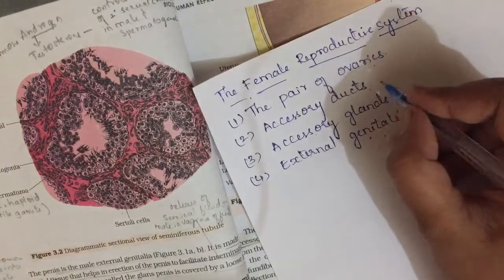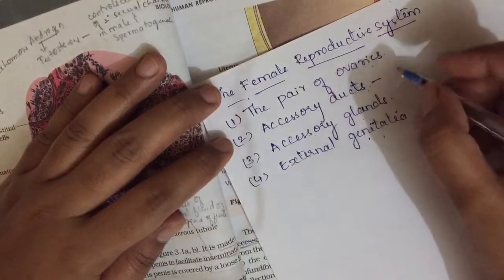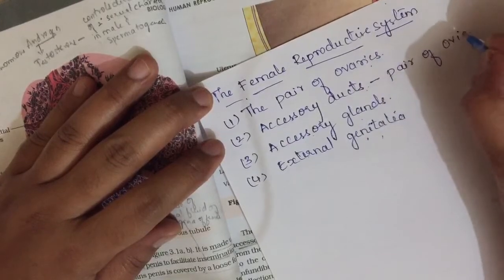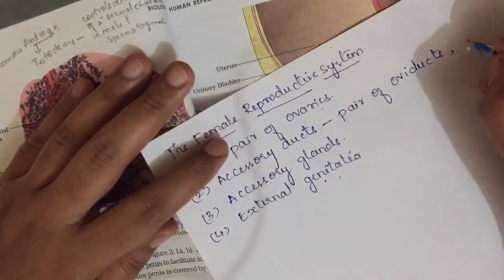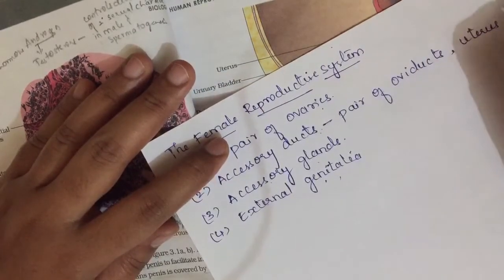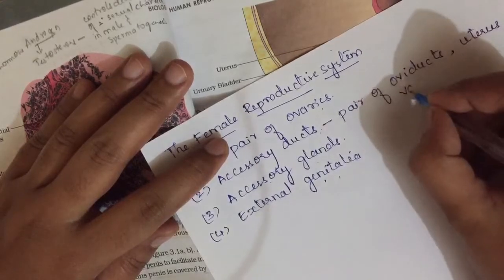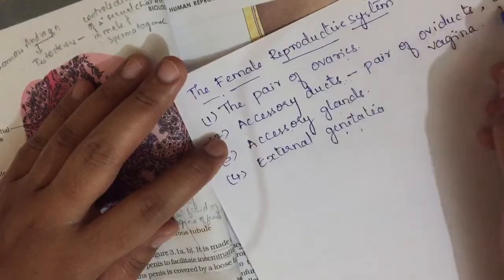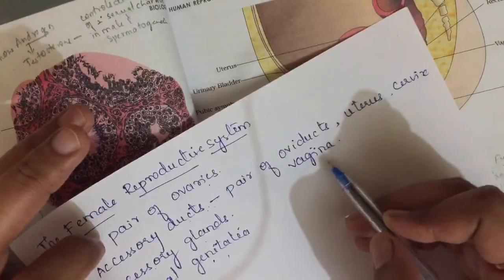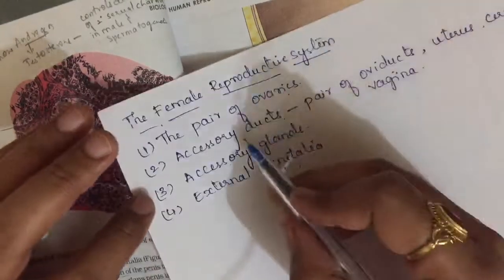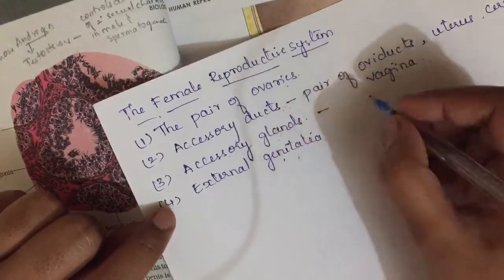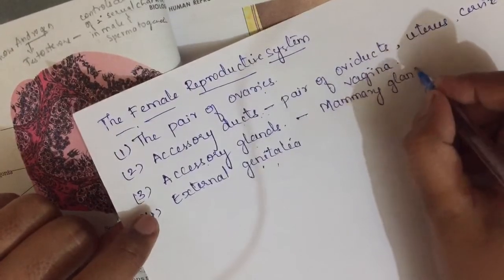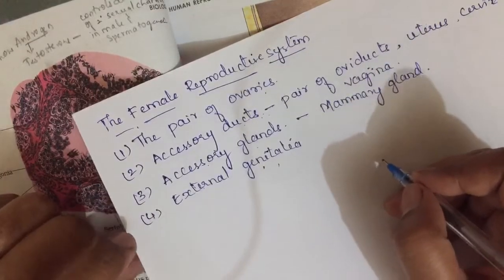The accessory ducts include a pair of oviducts, uterus, cervix, and vagina — all these come under accessory ducts. The accessory gland is the mammary gland, which as you know is a major feature of class Mammalia.